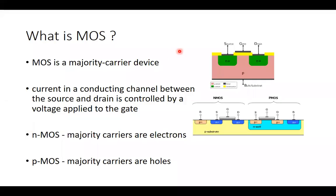Let's talk and try to understand what MOS is. MOS is a majority carrier device. It means the current that will flow through the device will be either due to electrons or due to holes, because it's a semiconductor device.